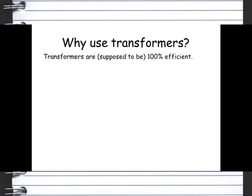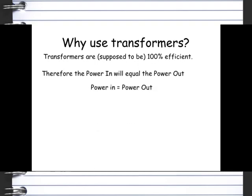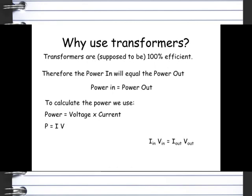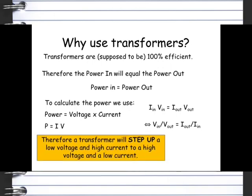So why do we use transformers? They're not 100% efficient, although they are supposed to be. So the power in will equal the power out, or it should do, providing there is no heat loss. So the power in equals the power out. To calculate power, you can use the voltage times the current. So I in times V in will equal I out times V out, which means you can actually work out any of the factors.